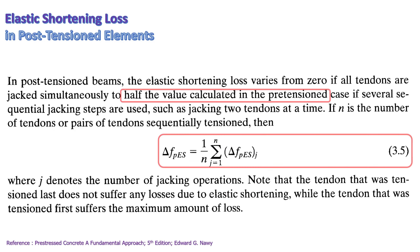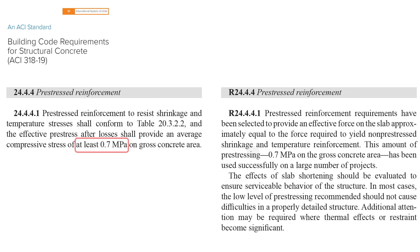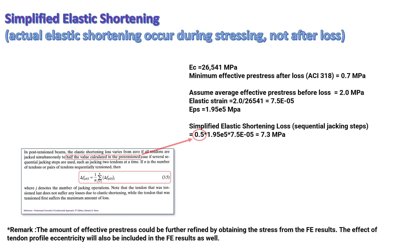The calculation for elastic shortening loss can be expressed by the following equation. For the post-tension slab, there will be several sequential jacking steps. Therefore, the elastic shortening loss for the post-tension slab is approximately half of the pre-tension case. ACI 318-19 specifies a minimum effective pre-stress after loss of at least 0.7 MPa. The simplified example calculation for elastic shortening loss is shown here. The amount of effective pre-stress could be further refined by obtaining the stress from the finite element analysis results, which also includes the effect of tendon profile eccentricity.